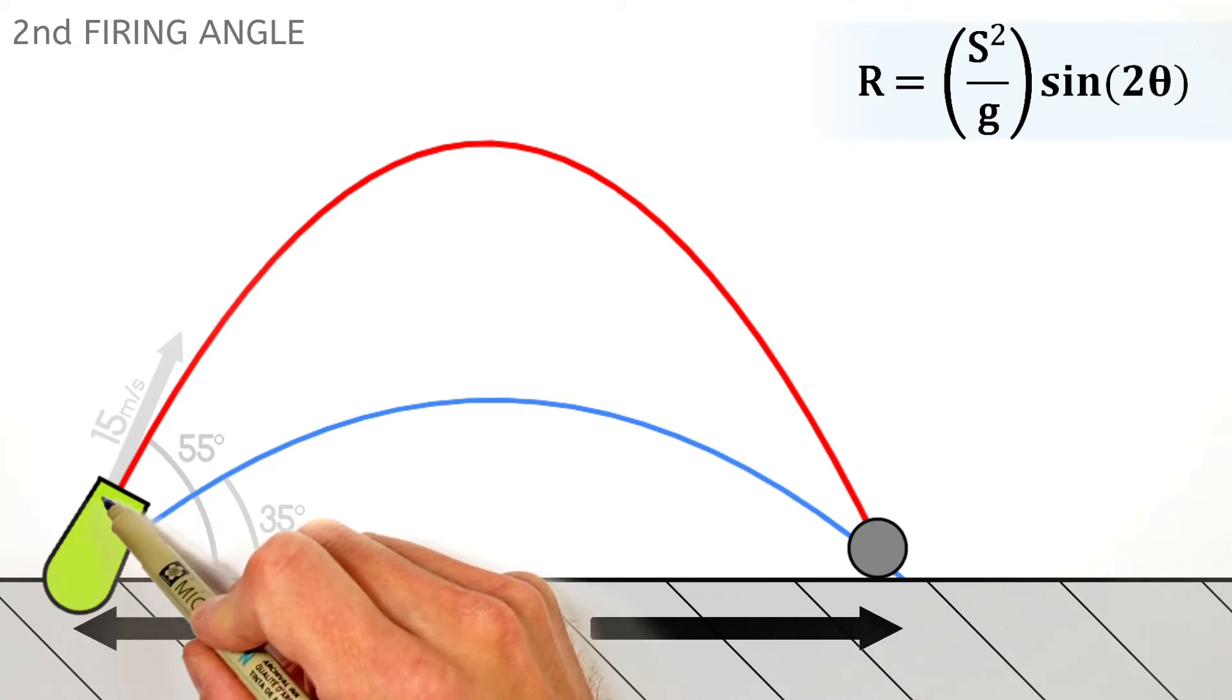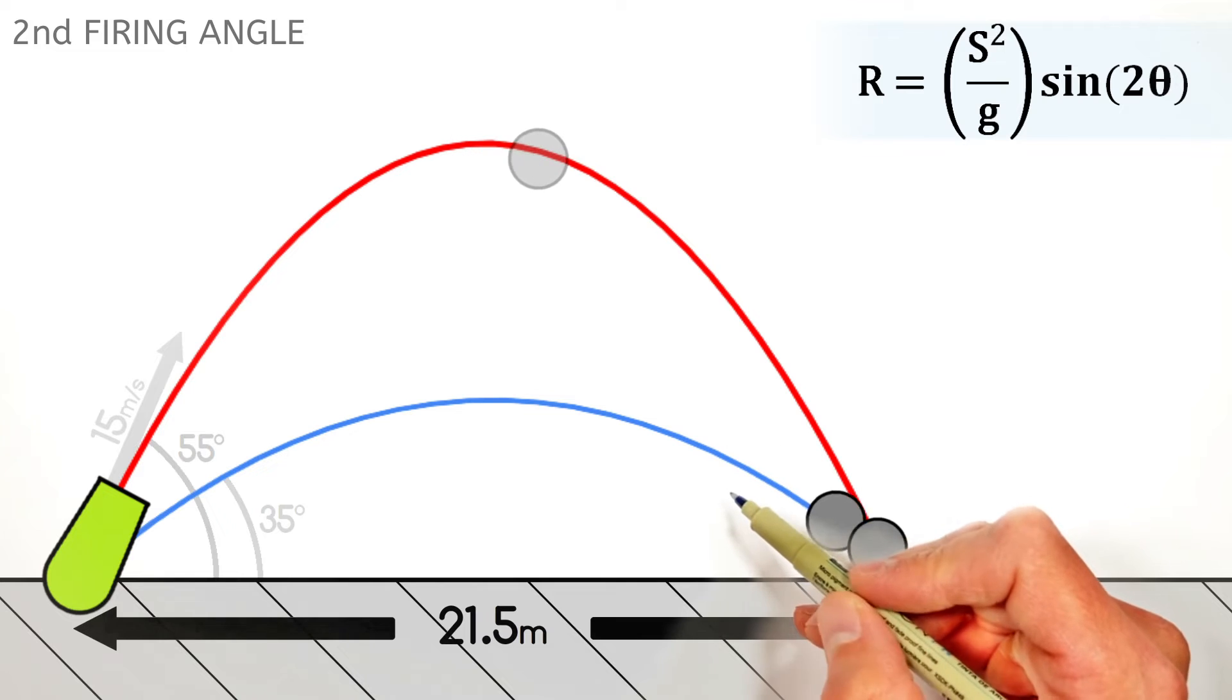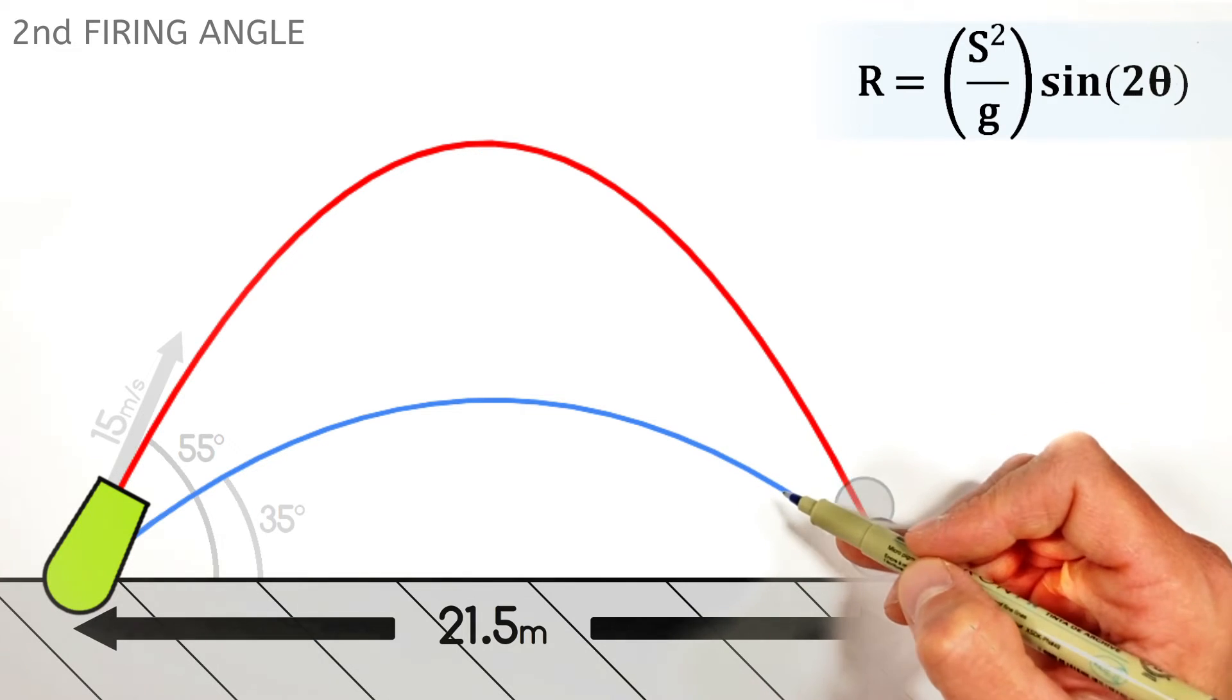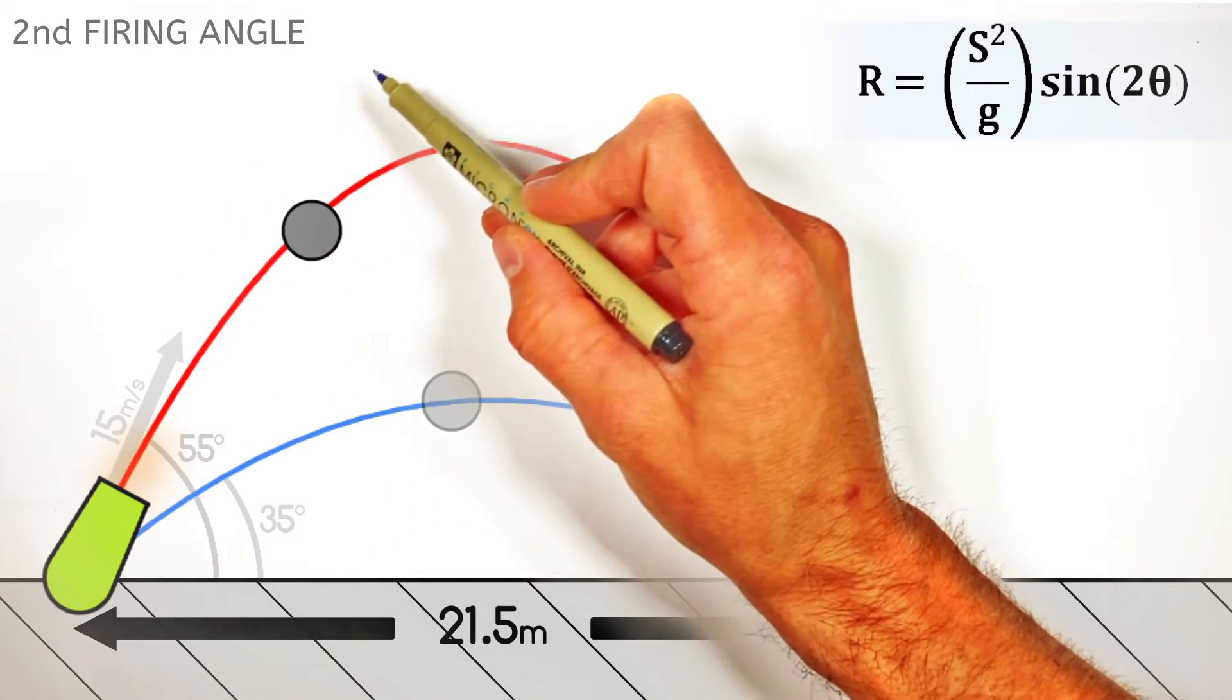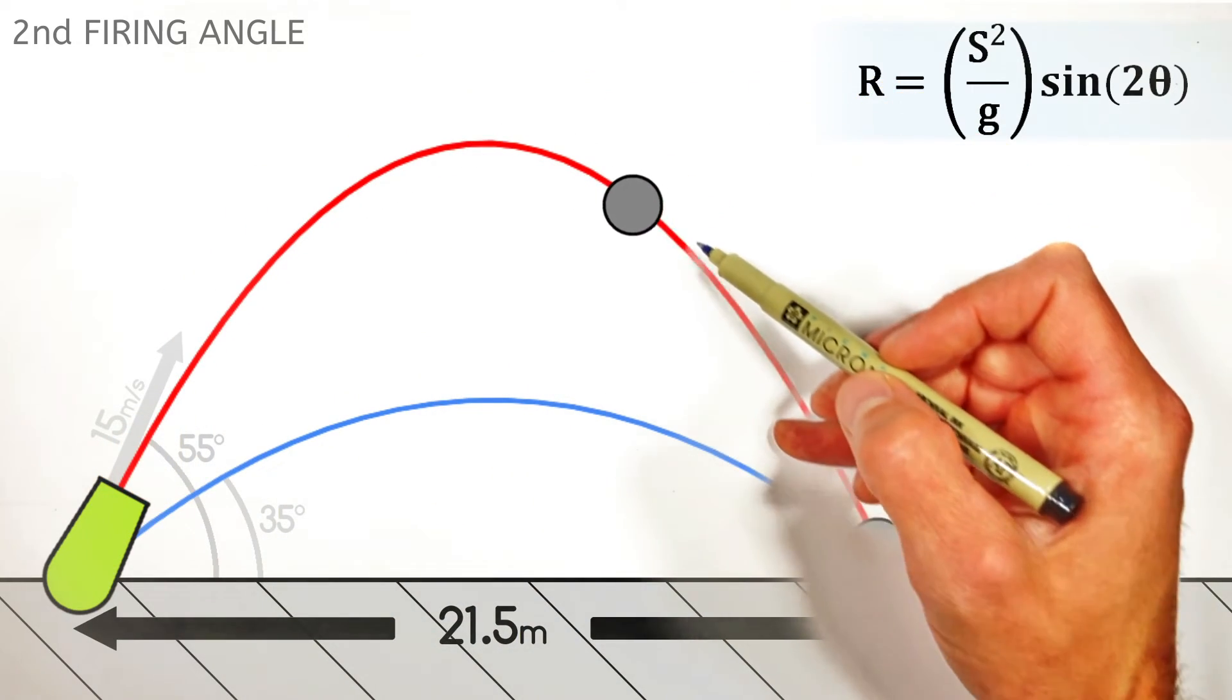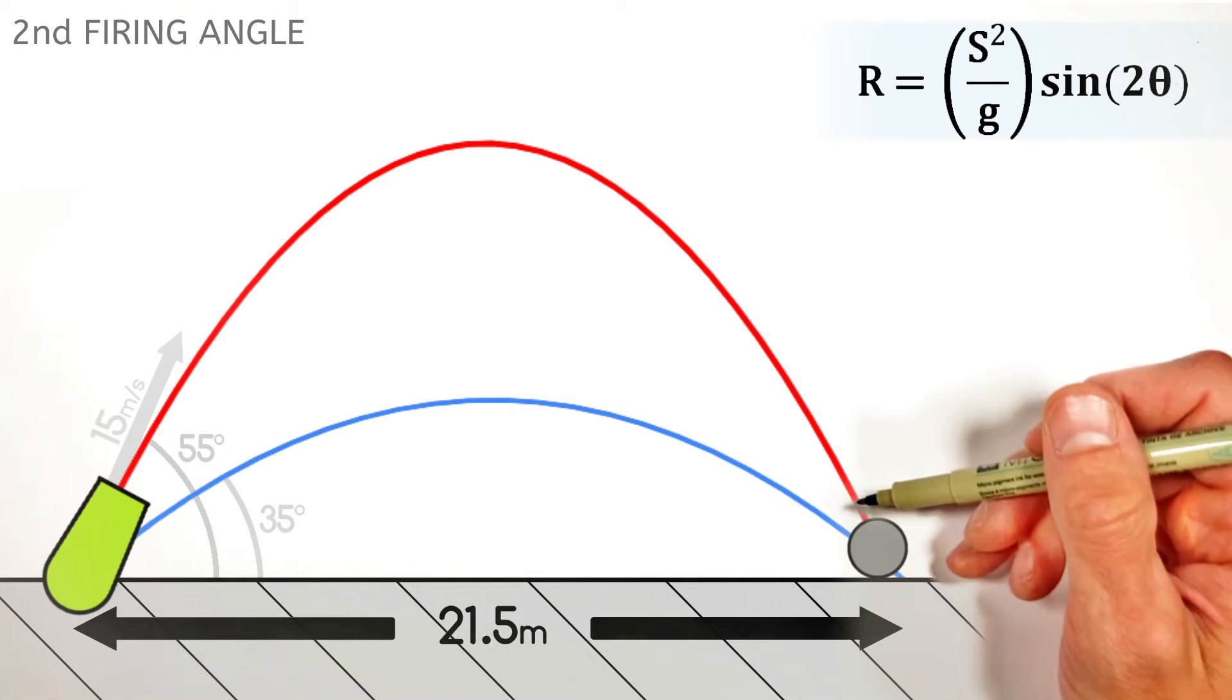See, when we shoot the cannonball in this low shot, it's moving very quickly horizontally and doesn't spend very much time in the air because it doesn't go that high. In the second shot, the cannonball spends a long time up in the air, but it's not moving horizontally very fast. But ultimately, it has the same horizontal range.